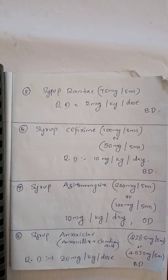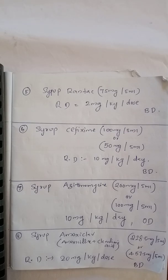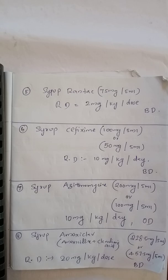Next is syrup amoxiclav — amoxicillin plus clavulanic acid. Available strengths in the market are 228.5 mg per 5 ml and 457 mg per 5 ml. The recommended dosage is 20 mg per kg per dose, and we can give it twice daily or thrice daily.